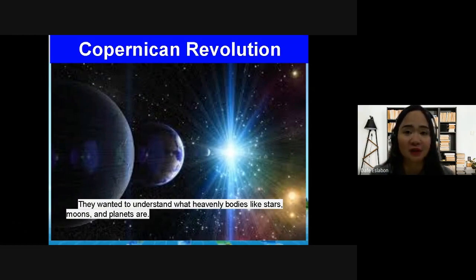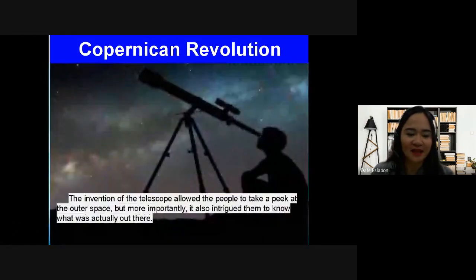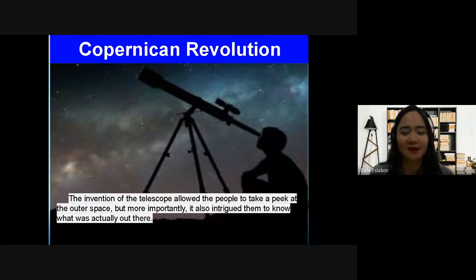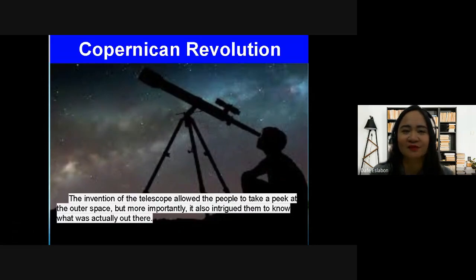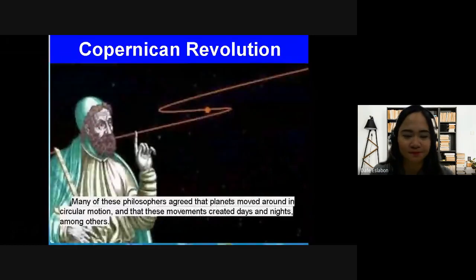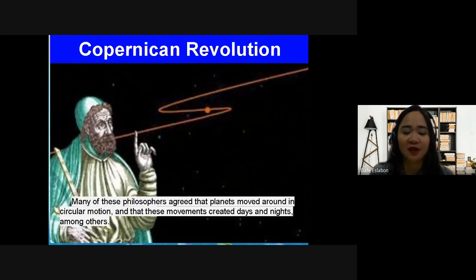The invention of the telescope allowed people to take a peek at outer space, and more importantly it intrigued them to know what was actually out there. At this time the telescope was invented so people could see what was in outer space. Many of these philosophers agreed that planets moved in circular motion, and that these movements created days, nights, and other phenomena.